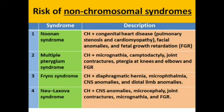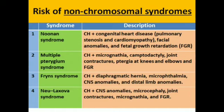There is also risk of some non-chromosomal syndromes. Four are particularly important. First is Noonan syndrome — cystic hygroma is present along with congenital heart diseases, especially pulmonary stenosis and cardiomyopathy, as well as facial anomalies and fetal growth retardation. The second syndrome is multiple pterygium syndrome — cystic hygroma is present with micrognathia, camptodactyly, joint contractures at the knees and elbows, and growth retardation.